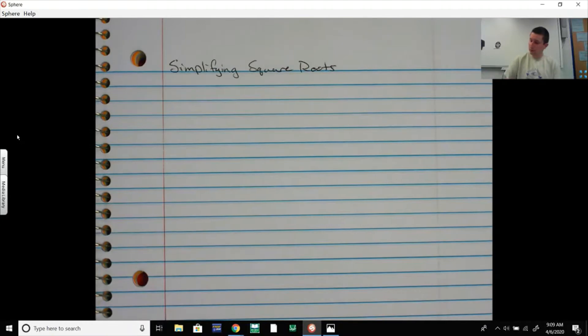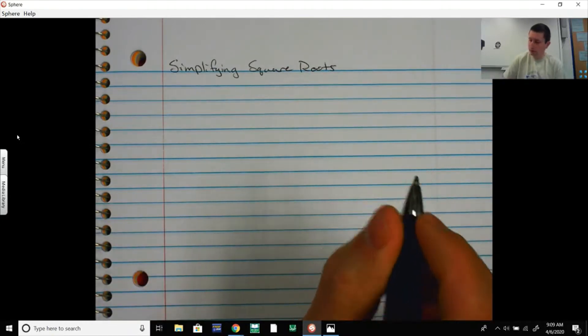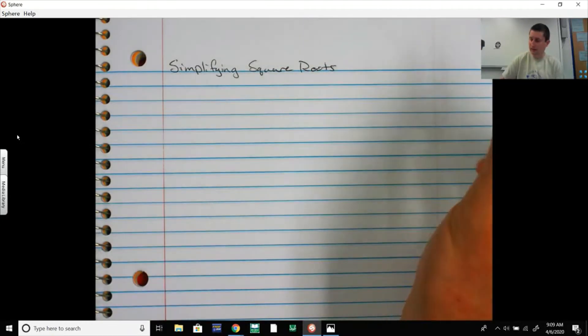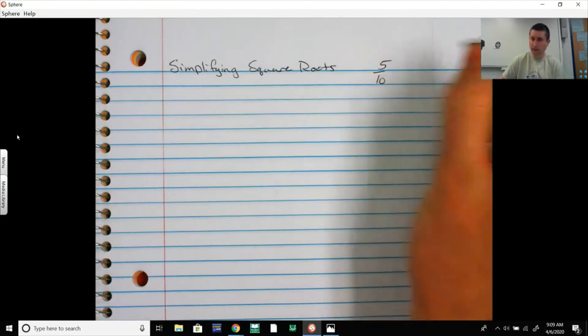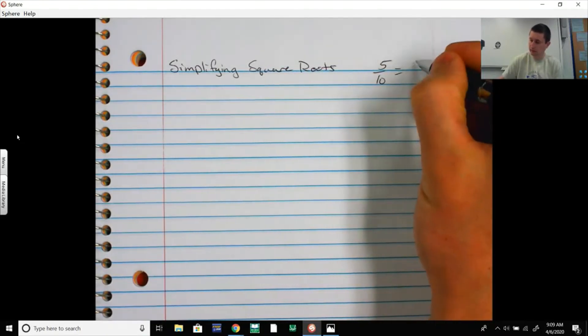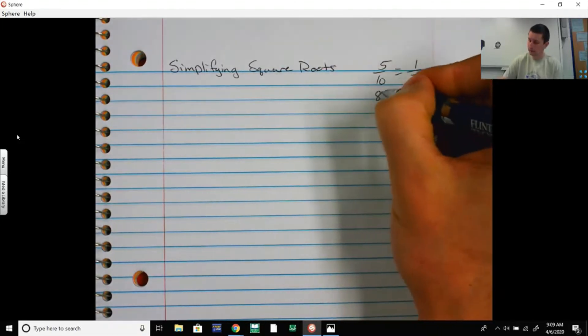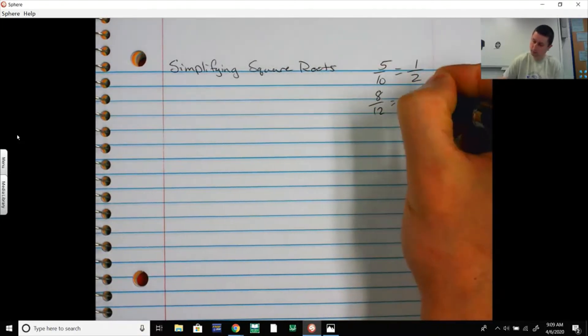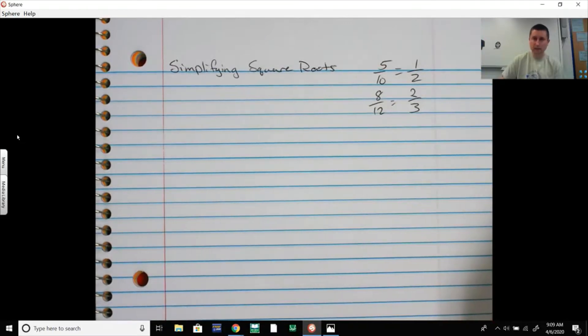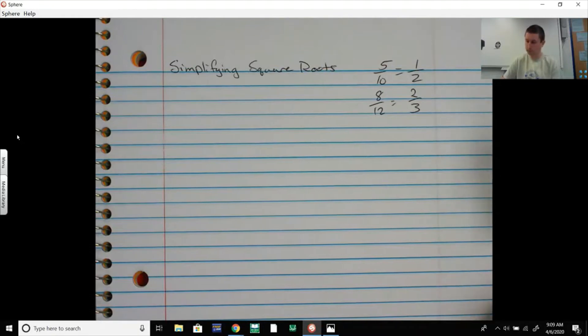So simplifying square roots. This is similar to fractions, the same idea. Like if we have 5 tenths for a fraction, we don't leave it 5 tenths, we reduce it to 1 half, divide top and bottom by 5. If we had 8 twelfths, we divide top and bottom by 4, we get 2 thirds. The same thing goes for square roots. There are ways you can simplify them and make them into lower numbers.